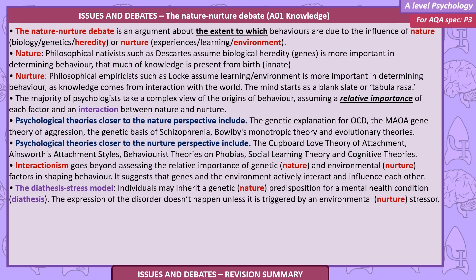On the nature side, philosophical nativists such as Descartes assume biological heredity and genes are more important in determining behaviour, and that much knowledge is innate. On the nurture side, philosophical empiricists such as Locke assume that learning and environment are more important, as knowledge comes from interaction with the world — the mind starts as a blank slate or tabula rasa.